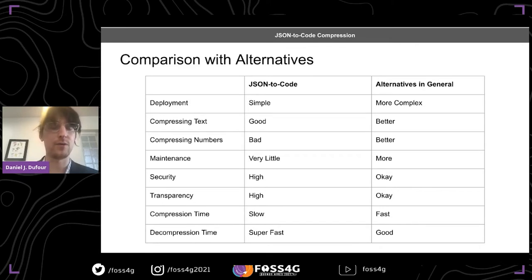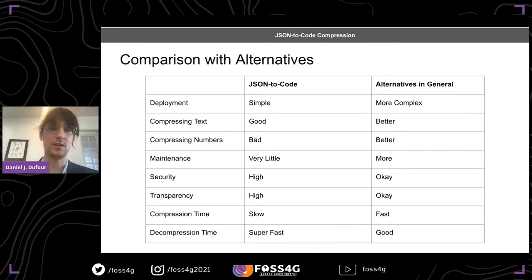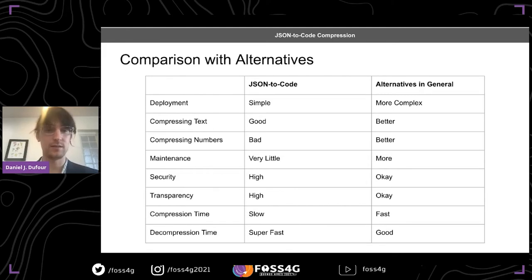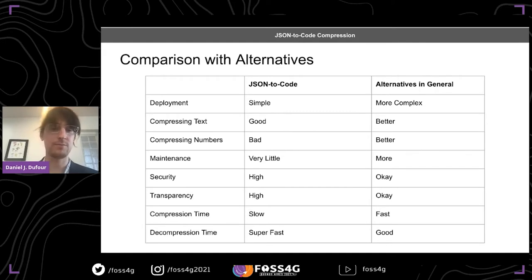Some more nuance: it does a really good job compressing text-rich data — like a GeoJSON with a lot of properties such as OSM data or proj4js definition strings. But if you have just lines without much text or attributes, it's not going to be the solution for you. It doesn't do numerical compression the way some other tools excel at.